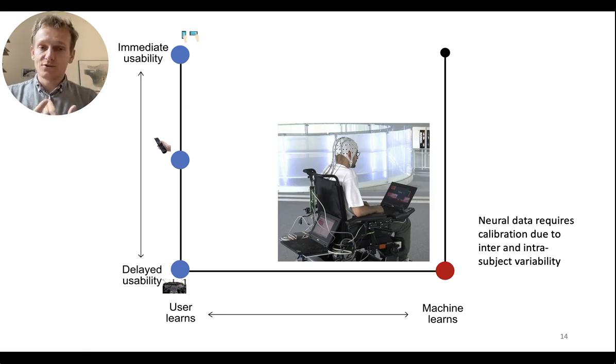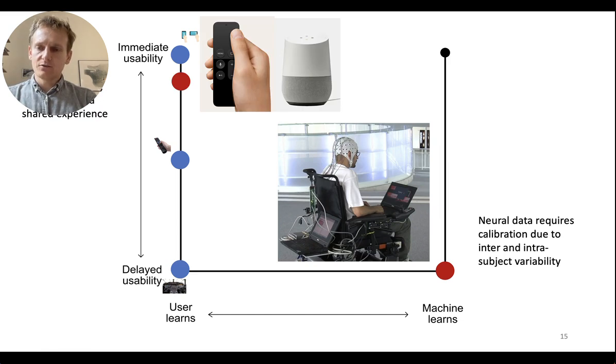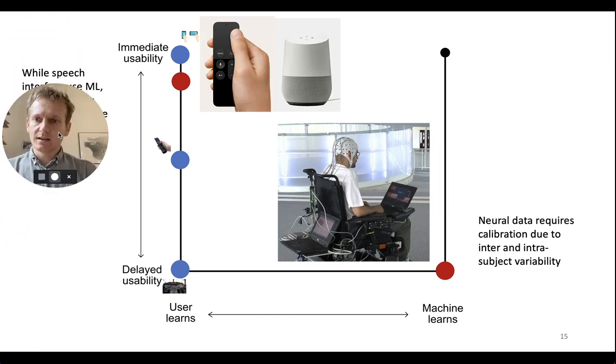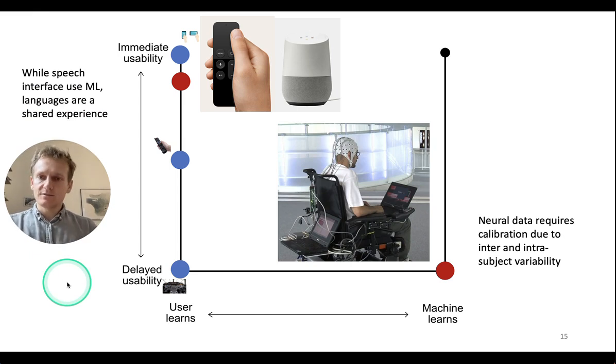That's all the user has to learn. On the right hand side where the machine has to learn, you have more like a brain computer interface where it's very easy to drive a wheelchair, to understand how the wheelchair works, but the machine needs to understand how your brain works. It needs to understand how you're going to say go forwards or go backwards, and that's different for you and for me and it takes quite a lot of time to calibrate. I want also to specify that not all machine learning is on the right side.